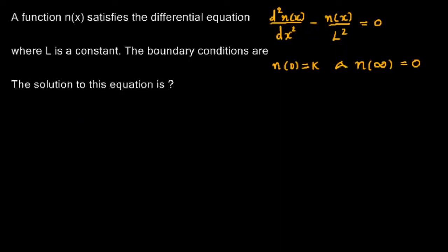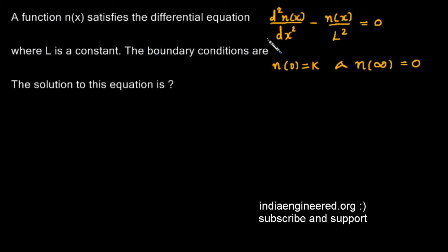This question was asked in GATE Electronics and Communication. We are given a function n(x) which satisfies the differential equation d²n(x)/dx² minus n(x)/l² equal to zero, where l is a constant. We are also given the boundary conditions, and we are asked to find the solution to this equation.